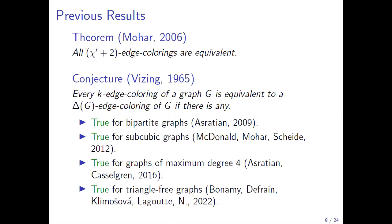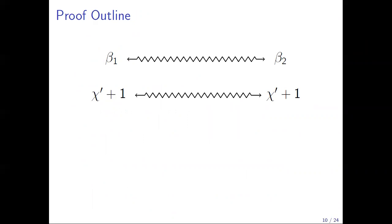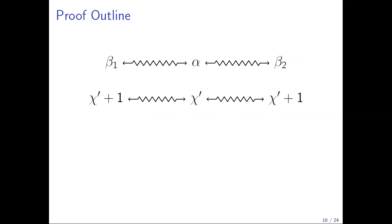For the rest of the talk, I will discuss the proof itself. The first step is proving that two chi-prime-plus-one colorings are equivalent. Given beta one and beta two, I choose a favorite chi-prime coloring alpha — somehow halfway between the two — find a sequence from beta one to alpha and from beta two to alpha, then concatenate to get a sequence from beta one to beta two.